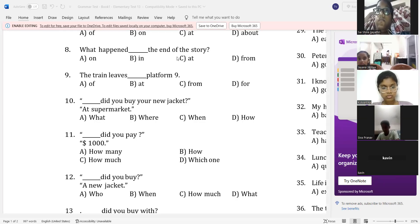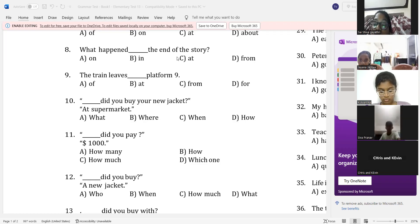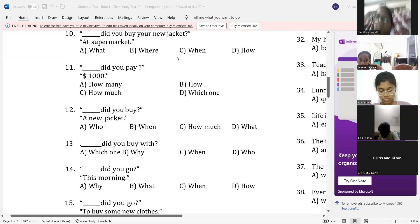Yeah. Write it down, guys. Write it down here. Kevin, 10, 11, and 12. Yes, sir. Yes, sir. Where did you buy your new jacket at supermarket? Super. How much did you pay? Can you repeat? How much did you pay? Thousand dollars. Very good. The last one. When did you? What did you buy? What did you buy? Yeah, it should be straightforward here. What did you buy? It should be straightforward. What did you buy is a new jacket. Right. Very easy.